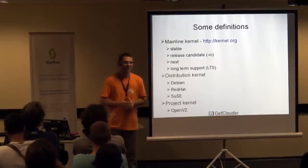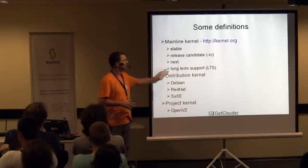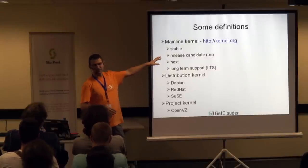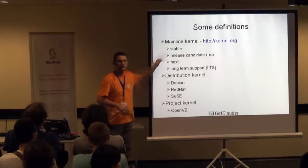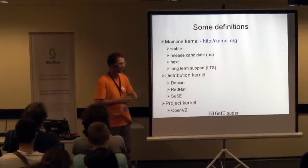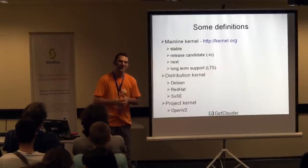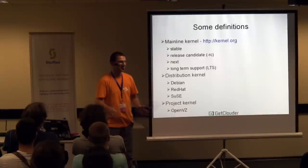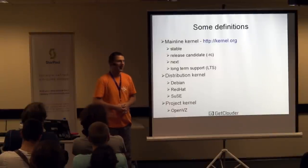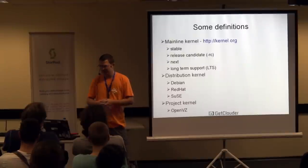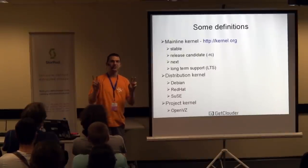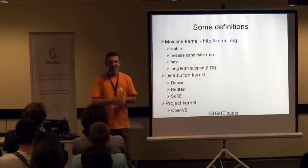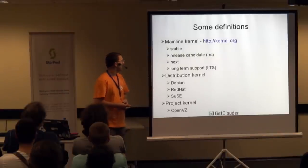There are different types of kernels you can download. All kernels come from kernel.org — these are called mainline kernels. For the mainline, we have stable kernels, meaning every time a minor version is released, it's considered stable. After that, we get additional patches for those versions. They are not officially branded stable, but since they follow the minor version, we also call them stable.